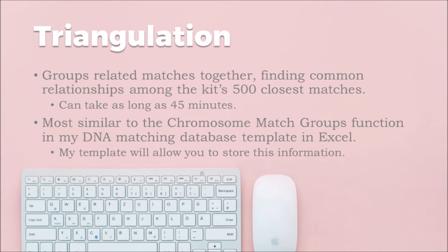The triangulation tool groups related matches together among your 500 closest matches. Anyone familiar with GEDmatch knows you can have upwards of 20-plus pages of matches, so 500 is comparatively not a very large number. This analysis can take up to 45 minutes. If you're going to run it, do not have any other analysis running in your browser, no other open tabs, don't do anything else on the computer — it will go much faster. When they say 45 minutes, they are not kidding.